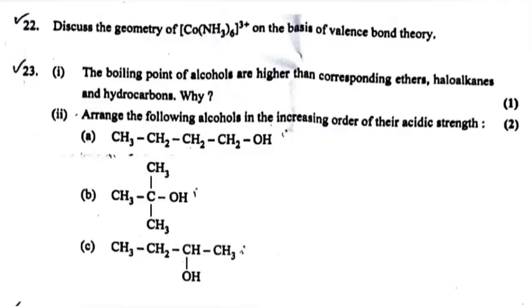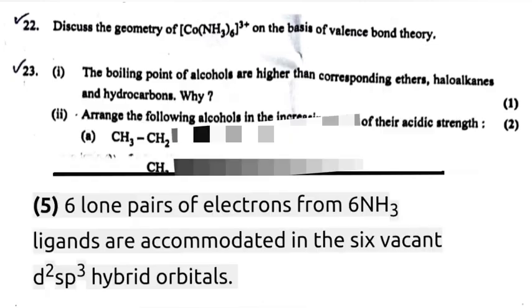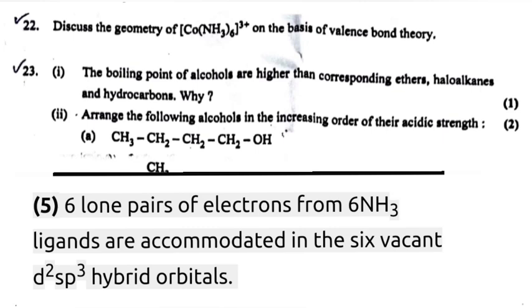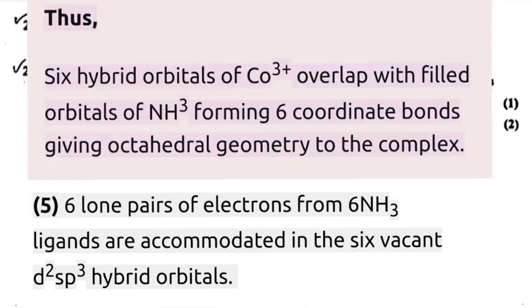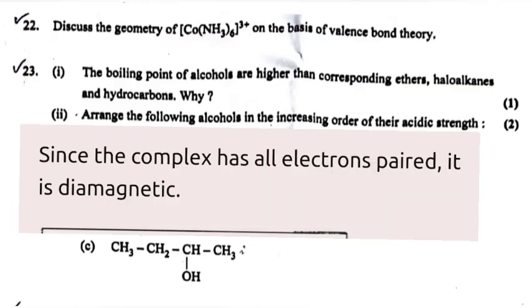Question 22: Discuss the geometry of [Co(NH3)6]3+ on the basis of valence bond theory. Answer: One 3d, one 4s, and three 4p orbitals form six d2sp3 hybrid orbitals, giving octahedral geometry. Six lone pairs of electrons from NH3 ligands are accommodated in the six vacant d2sp3 hybrid orbitals. Thus, six hybrid orbitals of Co3+ overlap with filled orbitals of NH3, forming six coordinate bonds, giving octahedral geometry to the complex. Since the complex has all electrons paired, it is diamagnetic.